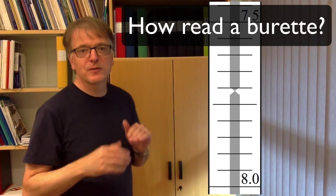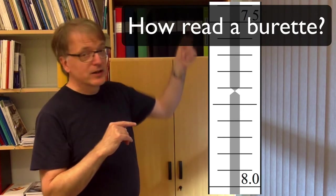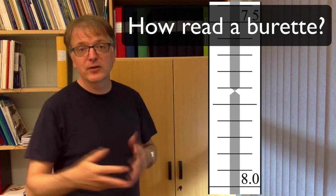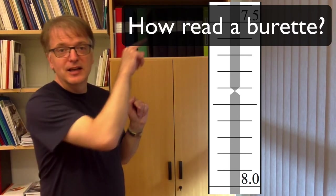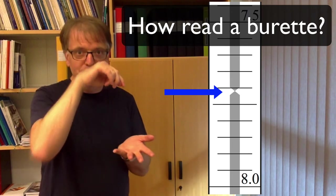And if the liquid is transparent, then there is an optical phenomenon that turns the colored band at the back of the burette into an arrow. And you should read that arrow exactly where it points.